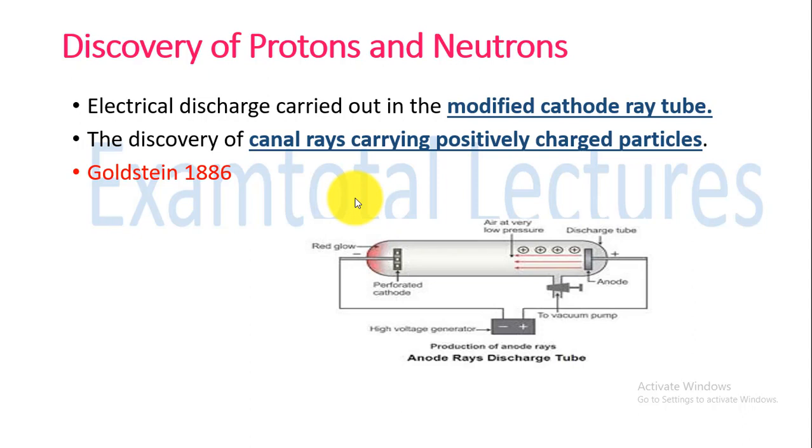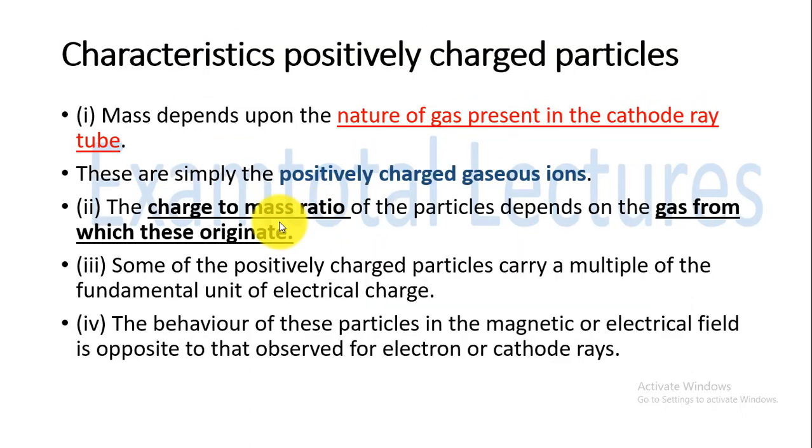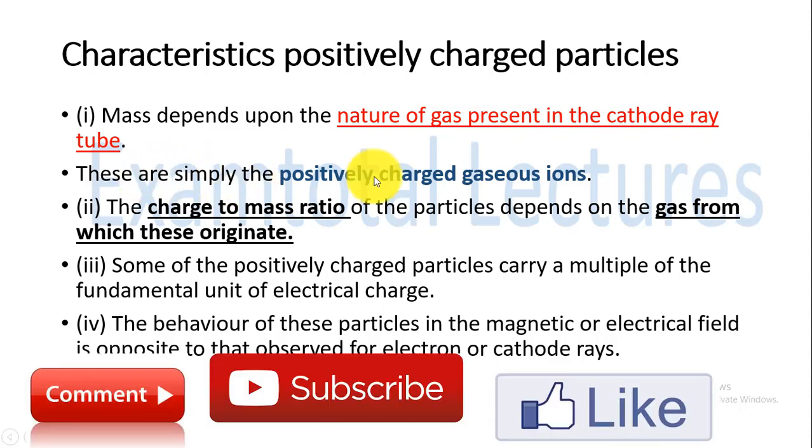Thompson observed these positively charged particles. These rays are called anode rays or canal rays. Further, Rutherford saw that protons are present in each nucleus. First of all, these are positively charged particles. Goldstein found that mass depends on the nature of the gas which is present in the cathode ray tube.